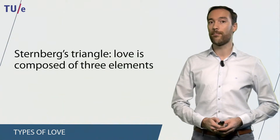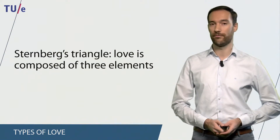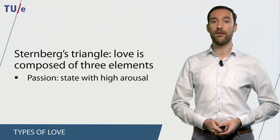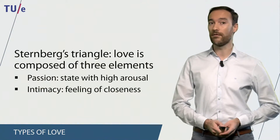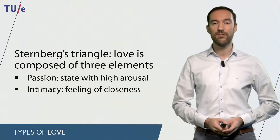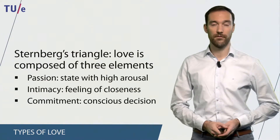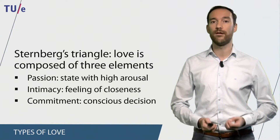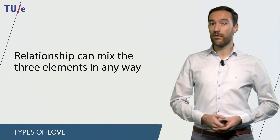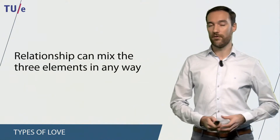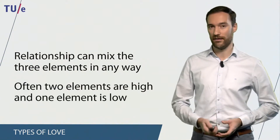Another way to look at this is by applying the so-called Sternberg's triangle. This triangle states that love is composed of three different elements. The first element is passion — a state with high physiological arousal. The second element is intimacy, a feeling of closeness towards another person. The third element is commitment, a conscious decision to be together with that other person. Relationships can mix these different elements in any way you can think of, and most relationships have two elements that are high and one element that is low.